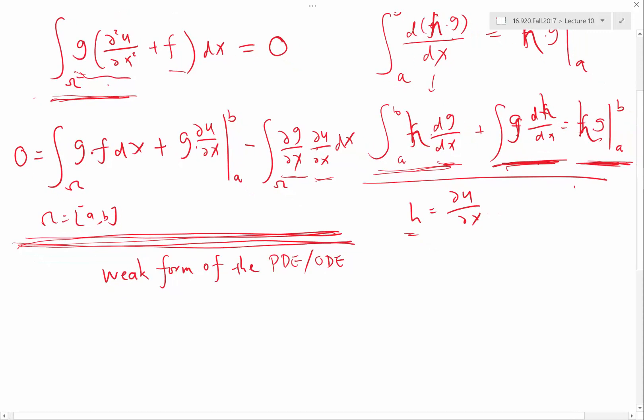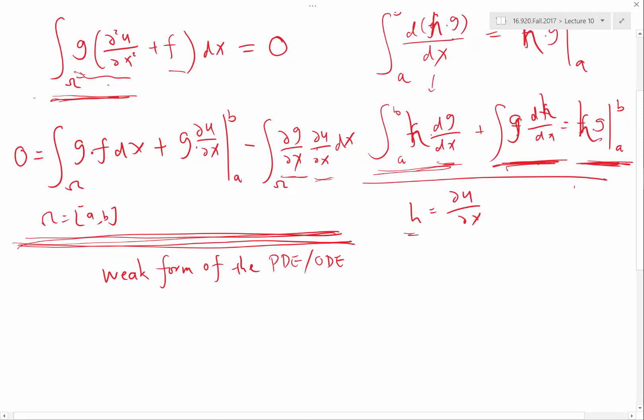So the weak form can usually be written as something like a function A, which is both a function of u and g, plus another function that is just a function of g, has to be equal to 0 for any g belonging to a certain class of linear functions. So this is what we call a weak form.